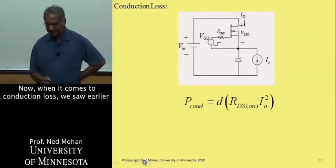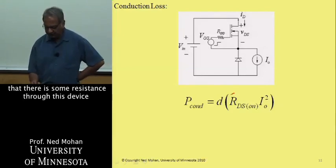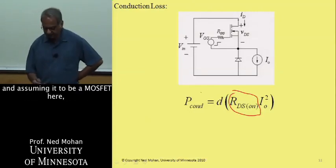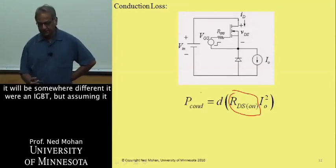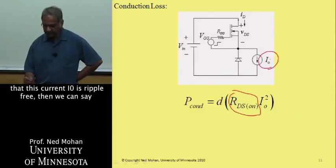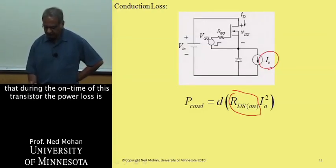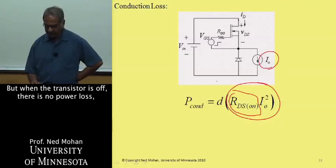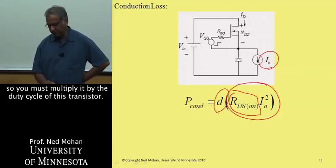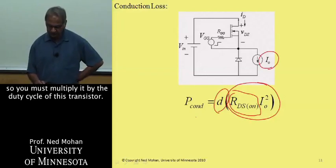When it comes to conduction loss, there is some resistance through the device. Assuming it to be a MOSFET, it has resistance RDS(on). If we assume the current I_O is ripple-free, then during the on time of the transistor, the power loss is given by I_O squared times RDS(on). When the transistor is off there is no power loss, so we must multiply by the duty ratio of the transistor. That is the conduction loss.